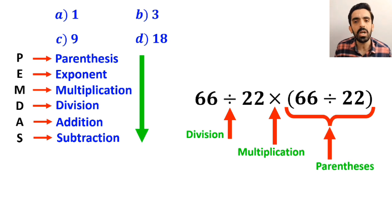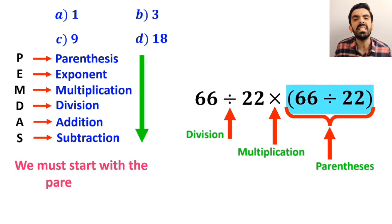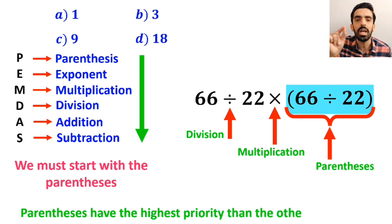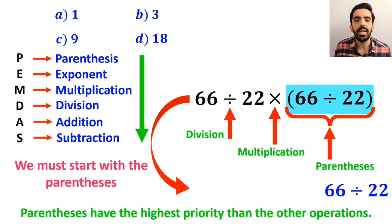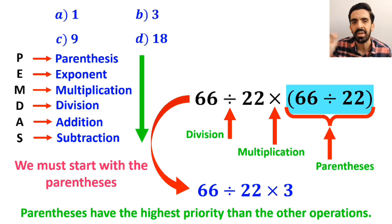According to the PEMDAS rule, we must start with the parentheses first because parentheses have the highest priority compared to the other operations. So we can write this expression as 66 divided by 22 multiplied by 3.